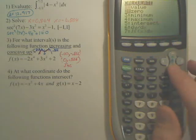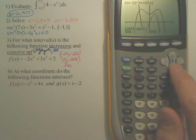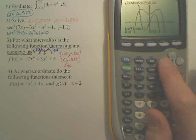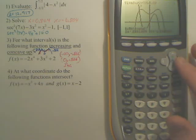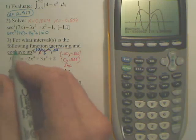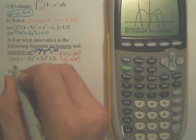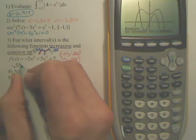So I go second trace. I'm going to do minimum first. And oh, I'm on the wrong function. Can you just push down and it jumps to the other function? I'm going to go left bound. Walk my way across to the right bound, guess. And your calculator pops out with negative 0.500.